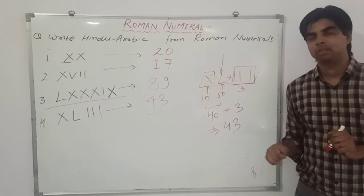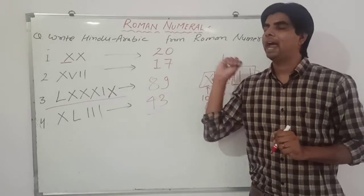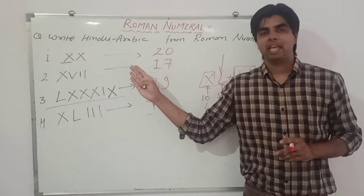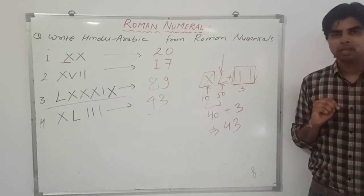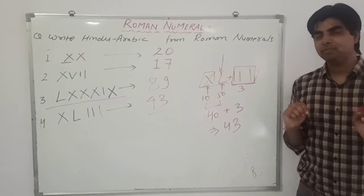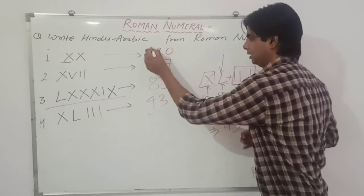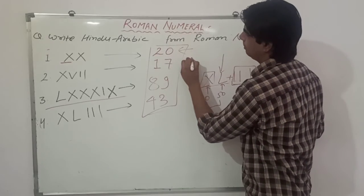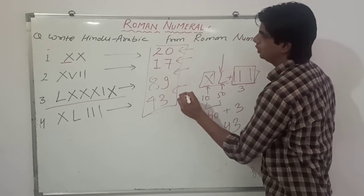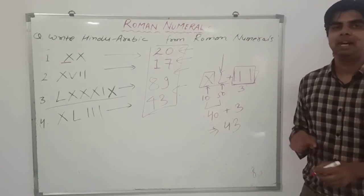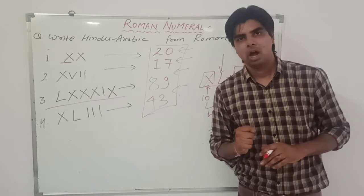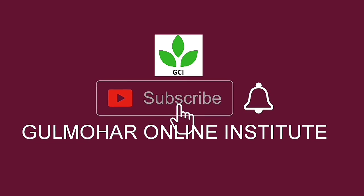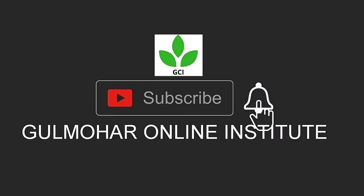For ascending and descending order you can do the same as we have already learned in previous videos. You just have to learn these Roman numeral values and then apply the ascending and descending rules to sort Roman numerals as well. Please subscribe to the channel to get notified of new videos.